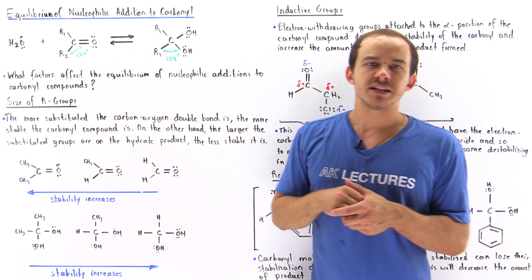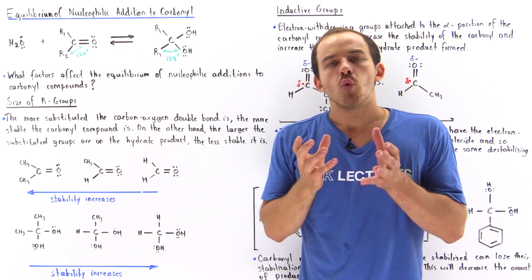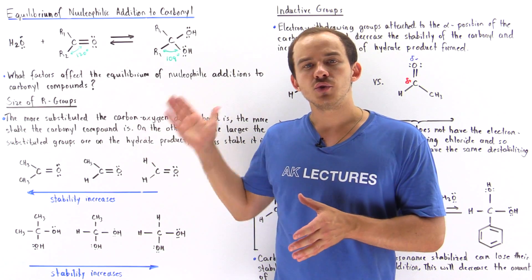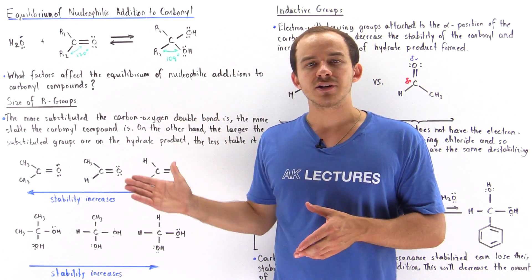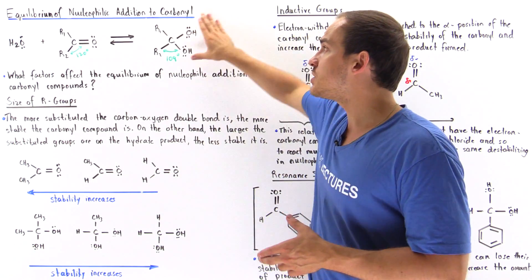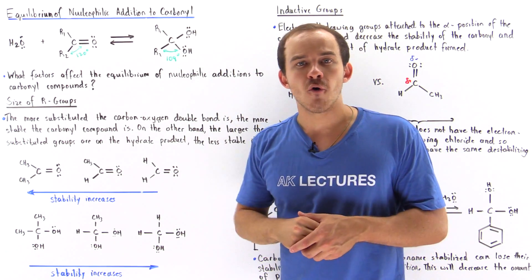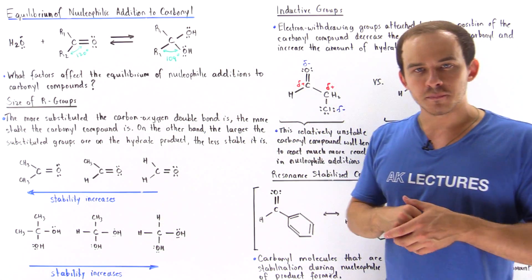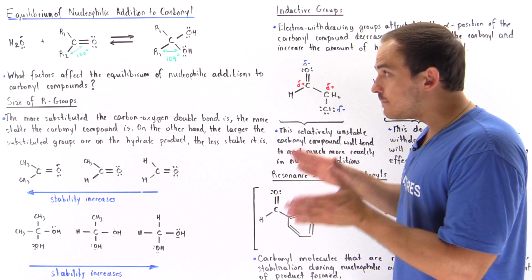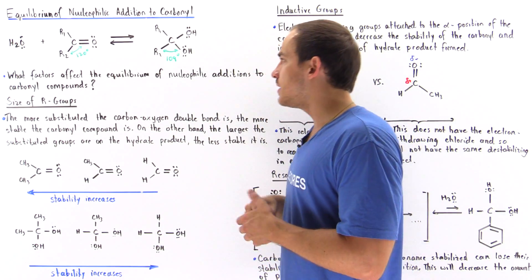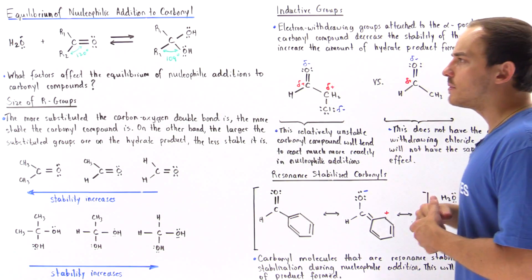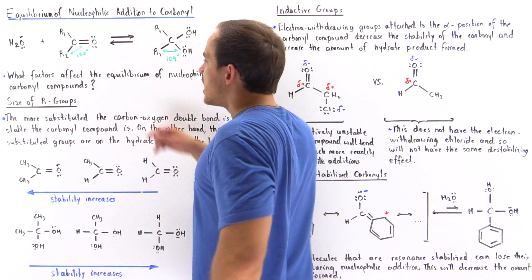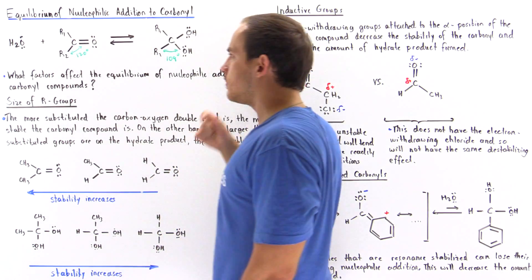The question we want to explore in this lecture is what exactly affects, what influences the equilibrium of this nucleophilic addition reaction — that is, how much of the product is actually formed and how much of the reactant is used up at equilibrium. Three things influence the equilibrium of nucleophilic addition to the carbonyl compound, and the first thing is the size of the R-groups attached to the carbon of the carbonyl.